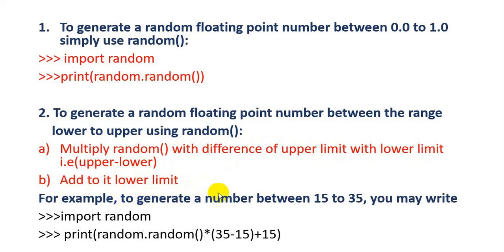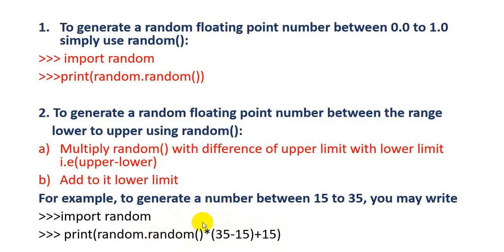For example, to generate a random number between 15 and 35, you write: random.random() * (35 - 15) + 15. If random.random() generates 0, then 0 * 20 + 15 = 15, so the lower bound 15 will be the result. If random.random() generates 1, then 1 * 20 + 15 = 35, so 35 will be the result. That is why we use this formula.